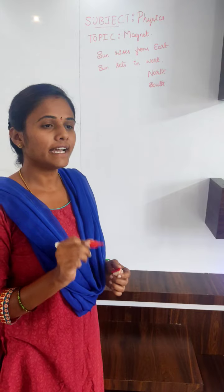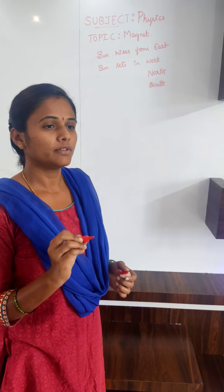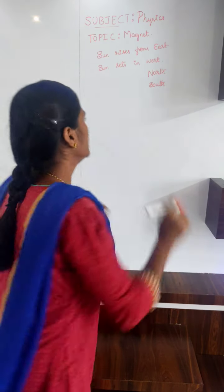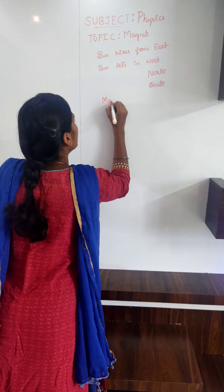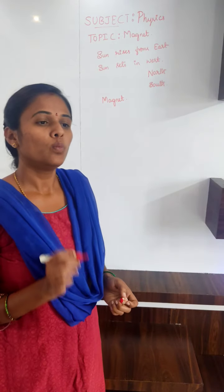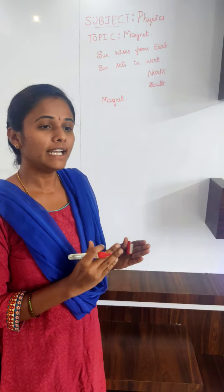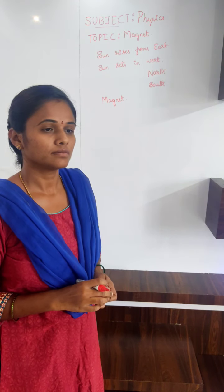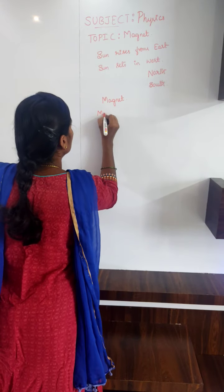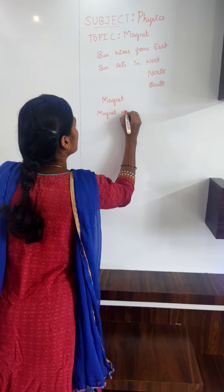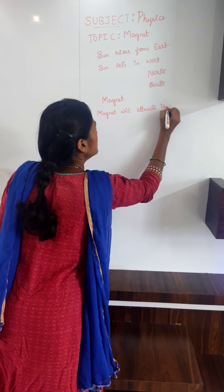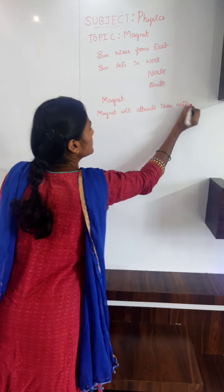Name the thing which is always directed towards north and south when suspended freely. Magnet. Very good — magnet. What happens if we put some iron nails near a magnet? Magnet will attract iron nails. Very good — magnet will attract iron nails.